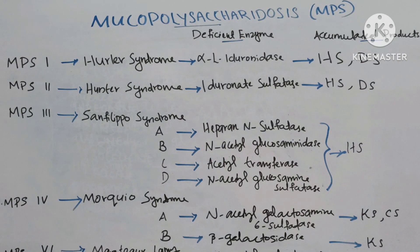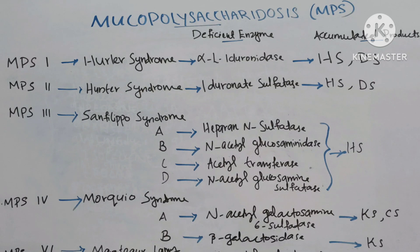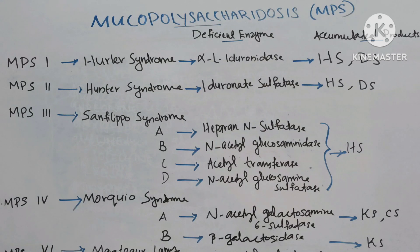MPS1, Hurler syndrome. The deficient enzyme is alpha-L-iduronidase and the accumulative products are heparin sulfate and dermatan sulfate. MPS2, Hunter syndrome. The deficient enzyme is iduronate sulfatase and the accumulative products are heparin sulfate and dermatan sulfate.